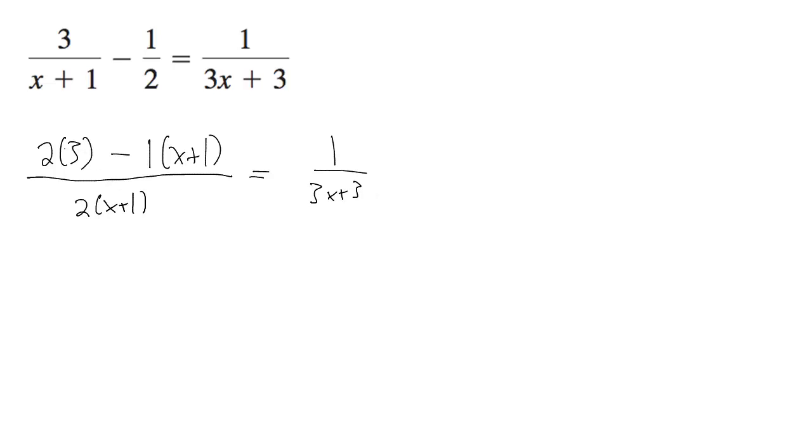So what we've got here ends up being 6 minus x minus 1, which is equal to 5 minus x, all over 2x plus 2 is equal to 1 over 3x plus 3.